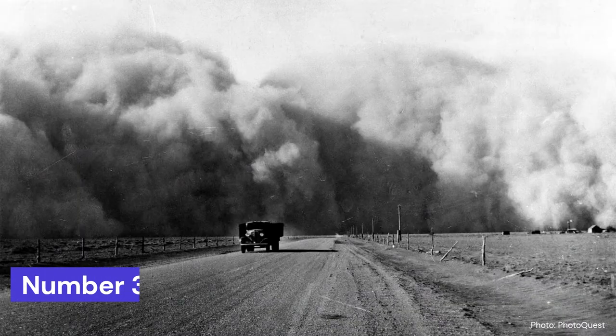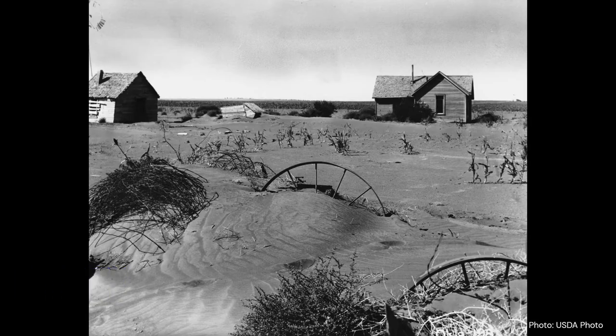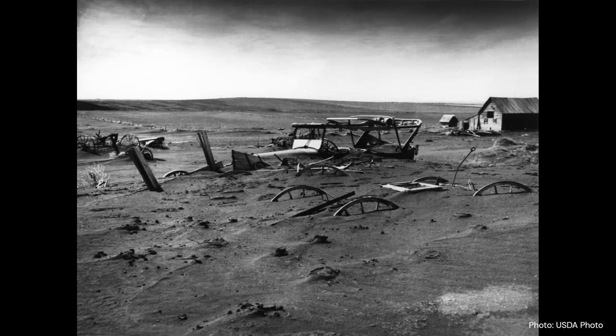Number three: the Dust Bowl in the central plains of the United States in the 1930s. The United States experienced a severe drought with an average annual rainfall of 500 millimeters in the early 1930s, after years of over-cultivation and generally poor land management.